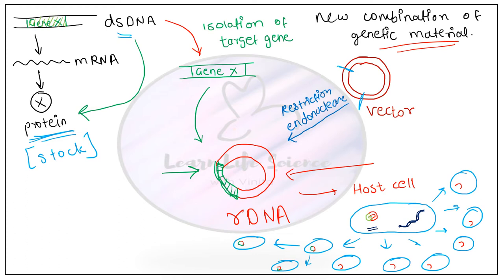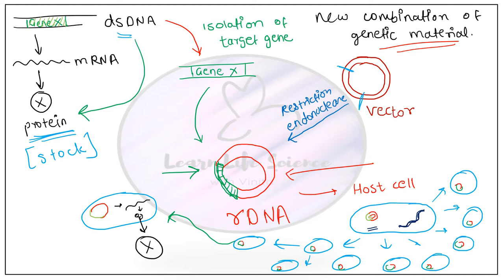Once the target gene is multiplied sufficiently in the culture system, the recombinant DNA in the bacteria will form mRNA and produce protein X, resulting in mass production of the desired protein. Essentially, you isolate the target gene, incorporate it into a vector, and the vector's multiple characteristics make it suitable for this recombination method. This is a general overview before we shift to discuss vectors and their characteristics.